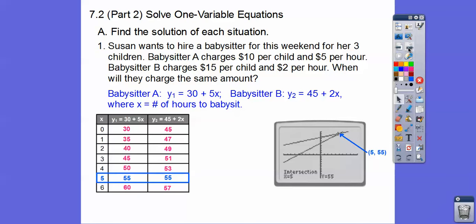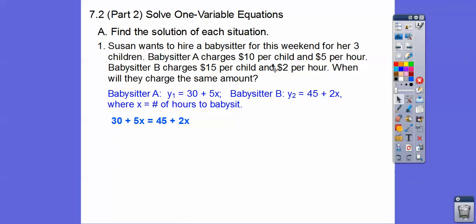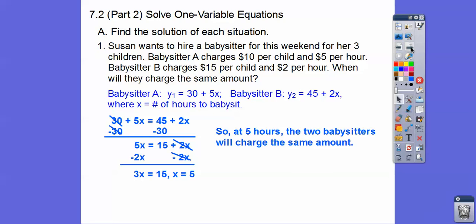We plugged it into a graphing calculator and that solved it for us also. At five hours, babysitter A will charge the same amount as babysitter B. Well, check this out. If they're going to charge the same amount, we want to know when they're equal. So we just set these two equations equal to each other and solve for x. We're going to subtract 30 from both sides. We get 5x equals 15 plus 2x. Subtract 2x from both sides. 3x equals 15, so x equals 5. So at five hours, the two babysitters will be the same.